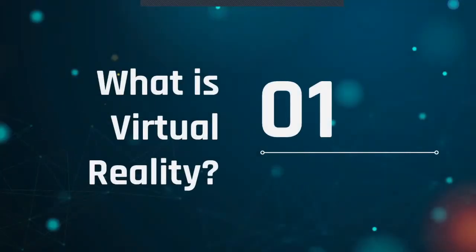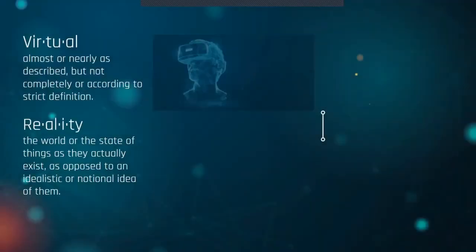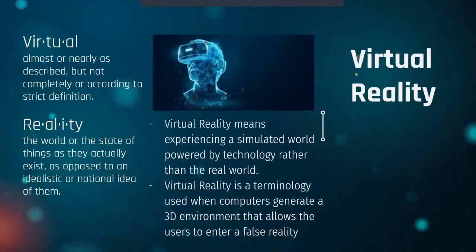Starting off — what exactly is virtual reality? Virtual is defined as almost or nearly as described, but not completely or according to a strict definition. Reality can be defined as the world or the state of things as they actually exist, as opposed to an idealistic or notional idea of them. Those two words come together: virtual reality means basically experiencing a simulated world powered by technology rather than the real world.